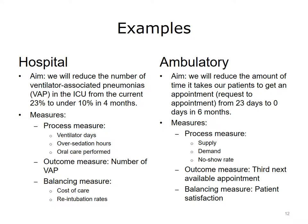The first is a hospital example. In this example, the staff of the ICU set an aim to reduce the number of ventilator-associated pneumonias, VAP. They set a specific aim with a clear timeline. For process measures, they chose factors related to VAP — for example, the more days a patient is connected to a ventilator, the more likely he will become infected. The outcome measure is the number or rate of VAP, which ties directly to the aim. Staff chose cost of care as a balancing measure, and also included the rate of re-intubation as a balancing measure, since some changes may cause patients to be extubated too soon.